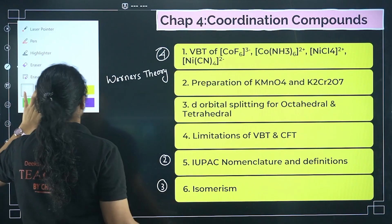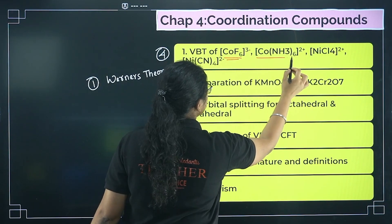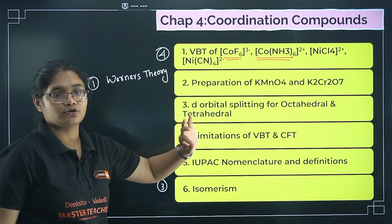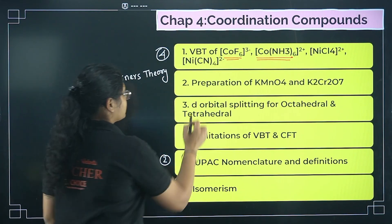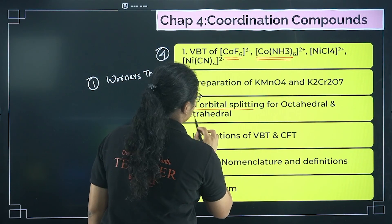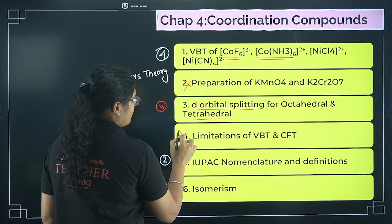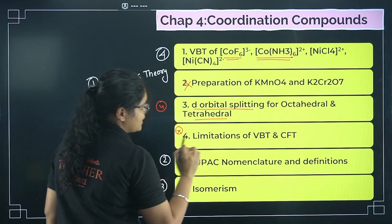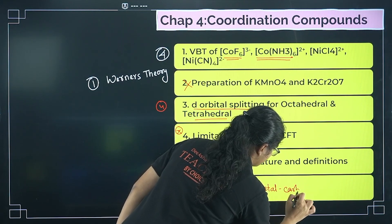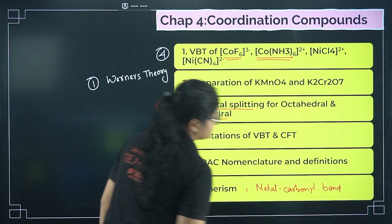For VBT, focus on these four compounds, but if you don't have time, at least do the ones with coordination number six: CoF6 and Co(NH3)6 — hybridization, magnetic property, and geometry should all be clear. Next, d-orbital splitting in octahedral and tetrahedral fields is important. Also, metal carbonyl bonding — the synergic effect and how the bond is formed — a question will definitely come from this.